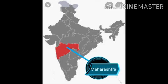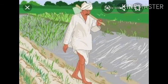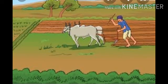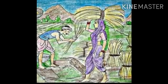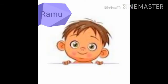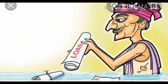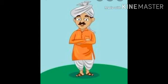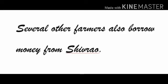The story begins in a small village in Maharashtra. Raju lives in the village. His father works in the field the whole day long to grow crops. Raju's mother also helps in the field. Raju has a younger brother Ramu, who is three years old. From time to time, Raju's father borrows money from Shivrao to run his family.